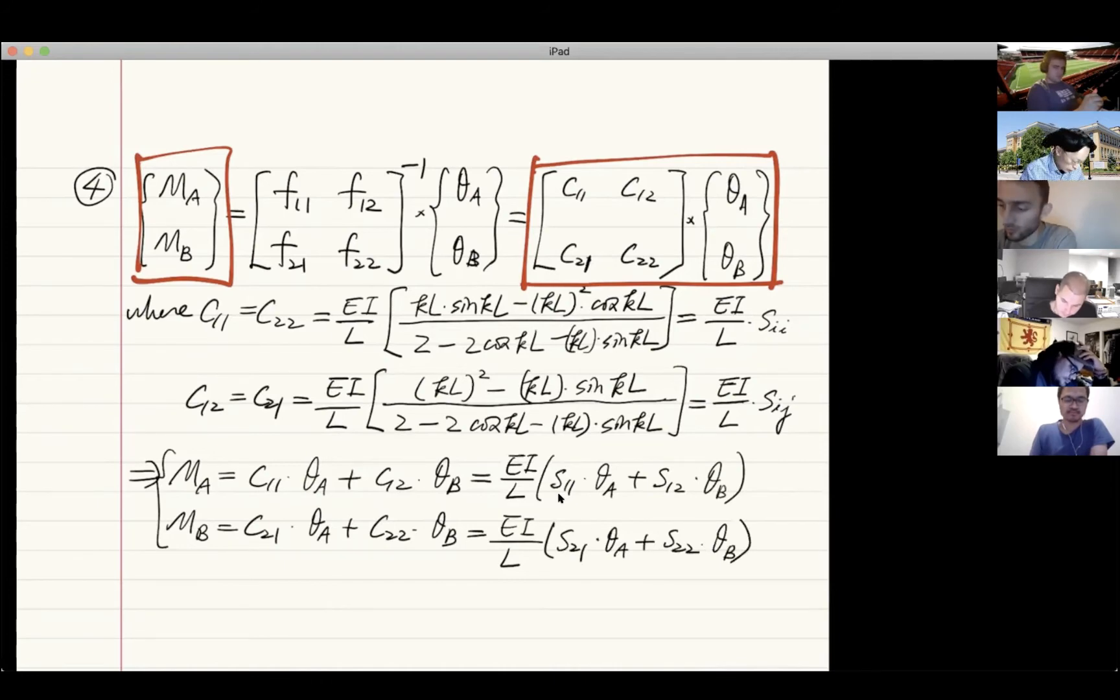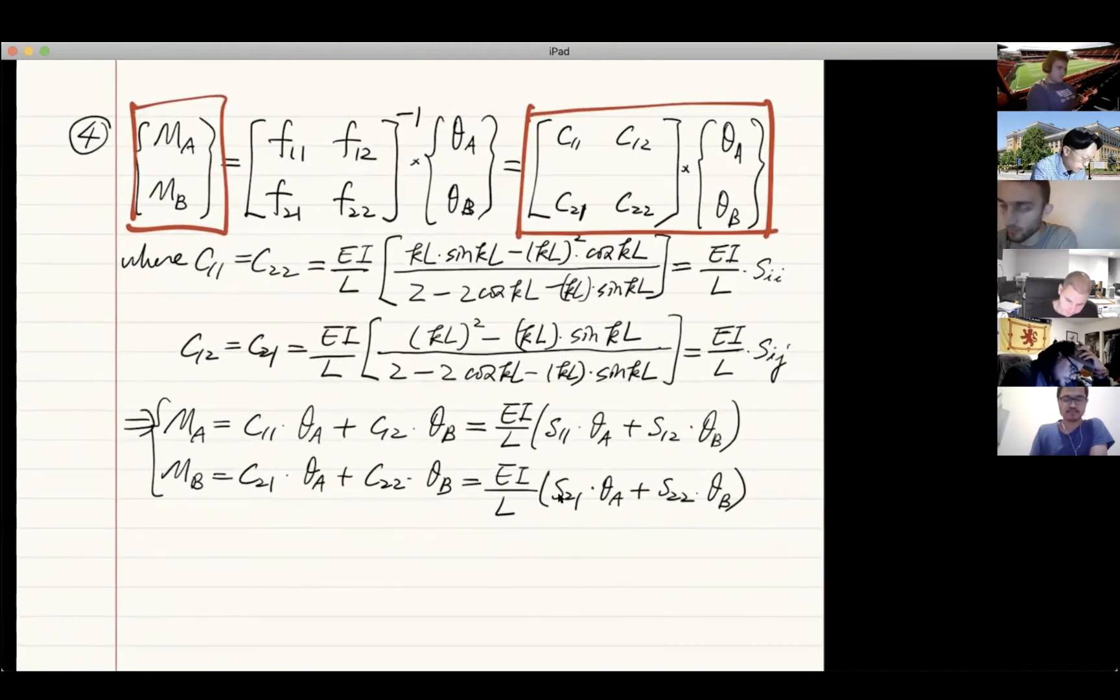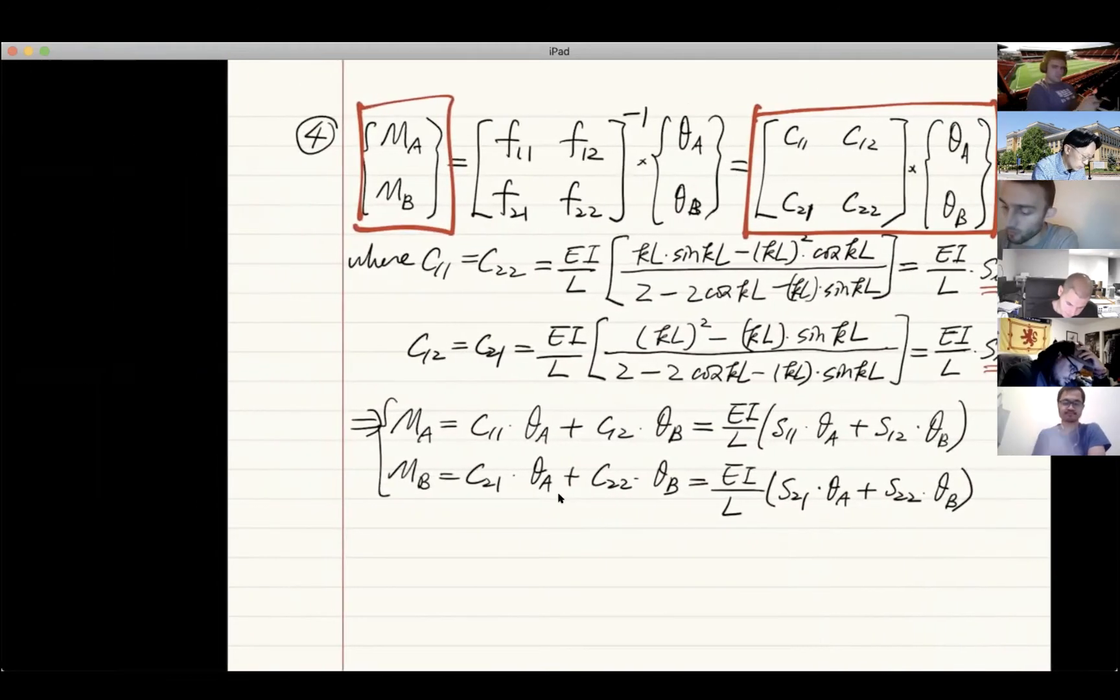And here, the coefficients sii and sij, they are what we call stability functions.